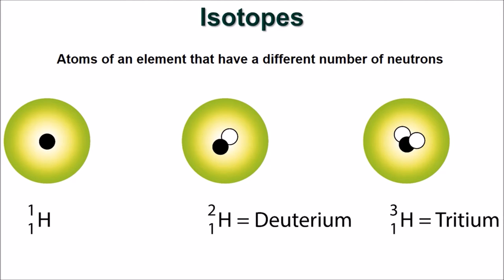For example, here are the isotopes of hydrogen. Each of them have one proton, but different numbers of neutrons. The isotopes of hydrogen are somewhat unique in that they have their own names.